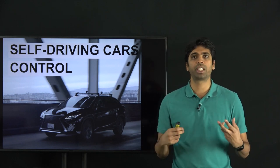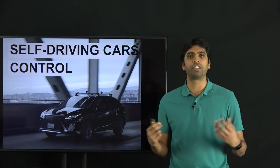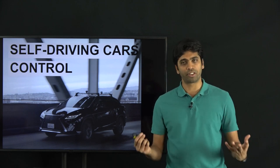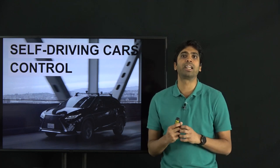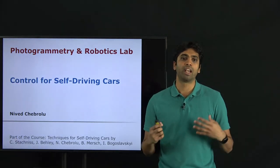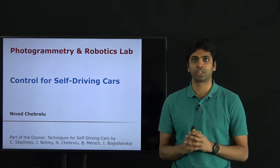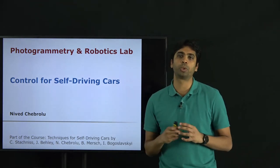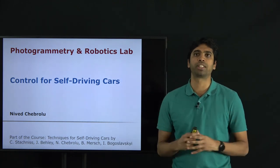We'll also look at a control law obtained as a result of an optimization problem and see what advantages that kind of controller gives. Broadly speaking, we look at different strategies to control a car along a desired trajectory and the goal is to develop control laws which give us a smooth driving experience for a self-driving car. This lecture is part of an ongoing course on techniques for self-driving cars.